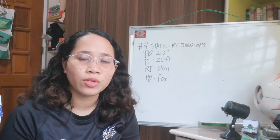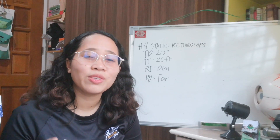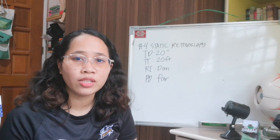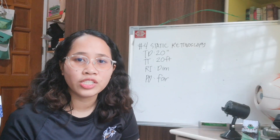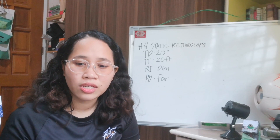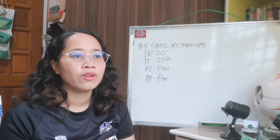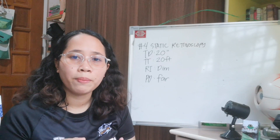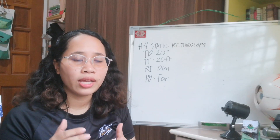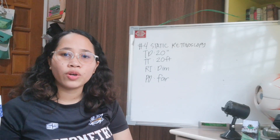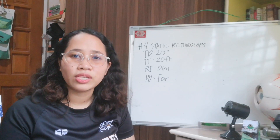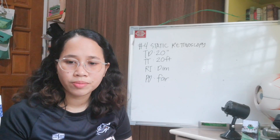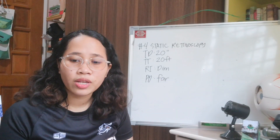It is called static retinoscopy because the patient is looking at a far or distant object, so the accommodation is relaxed and not active. Therefore, in step number five or six, they are called dynamic retinoscopy because the patient will be looking at near, making their accommodation active. That's the difference between static and dynamic retinoscopy. Static retinoscopy measures spherical error.